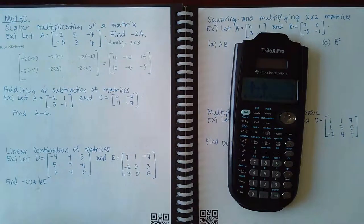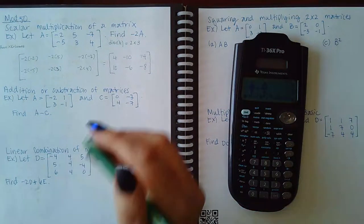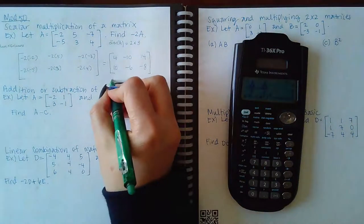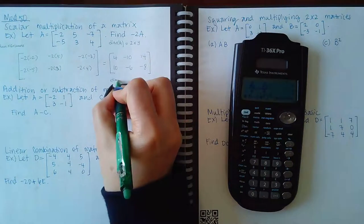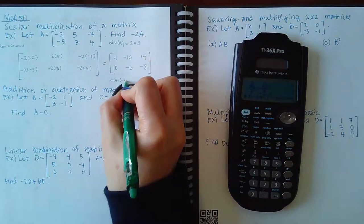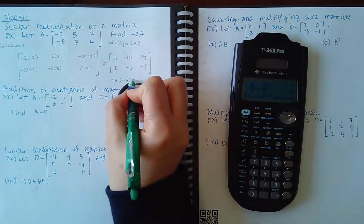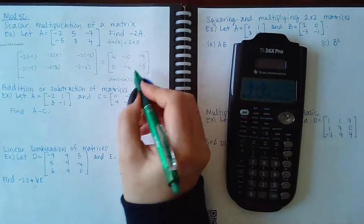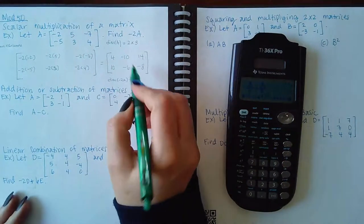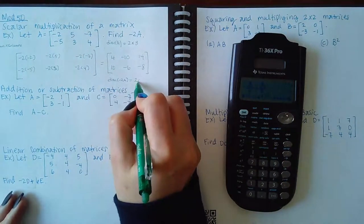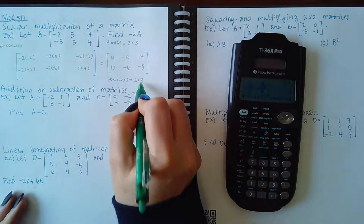Notice that when you multiply by a scalar, you end up with the same dimensions — two rows by three columns.